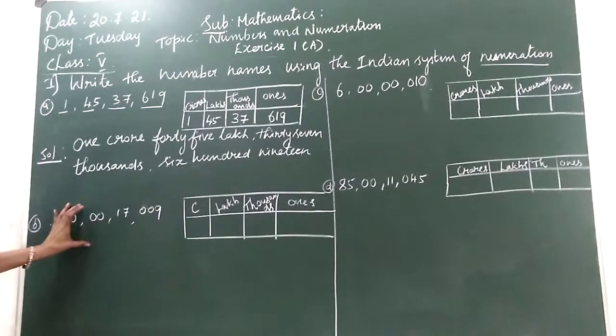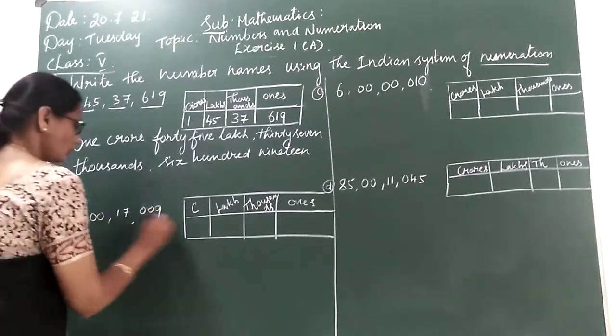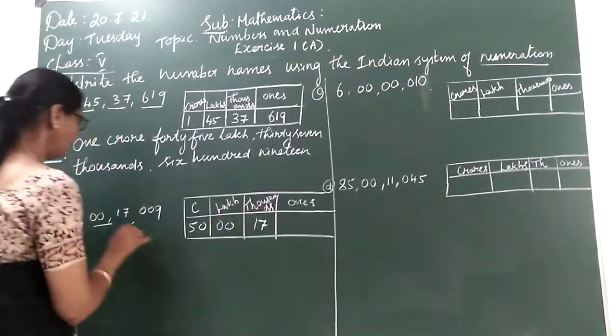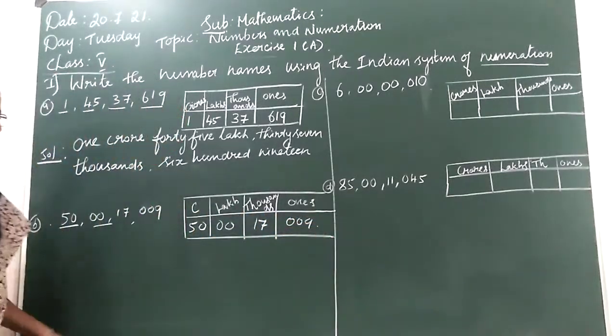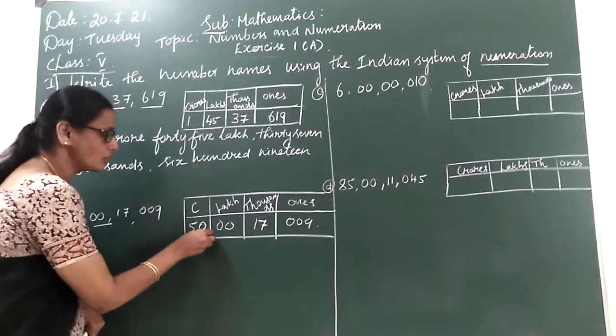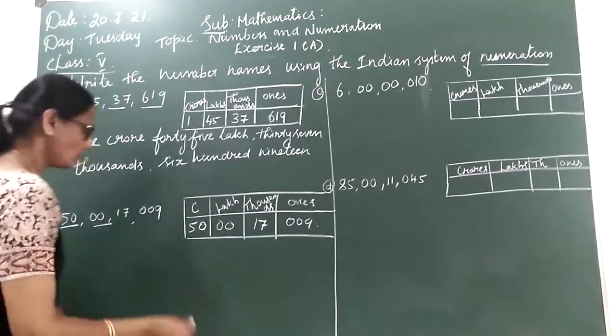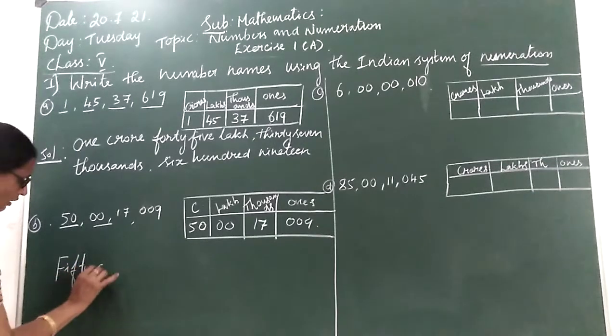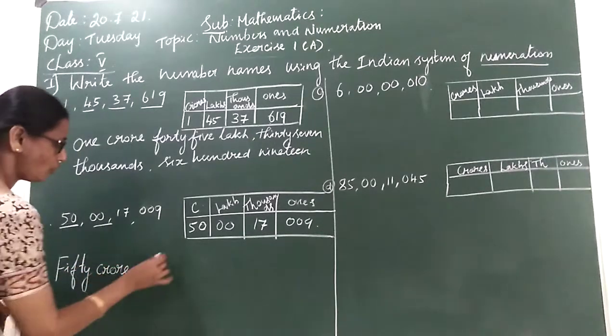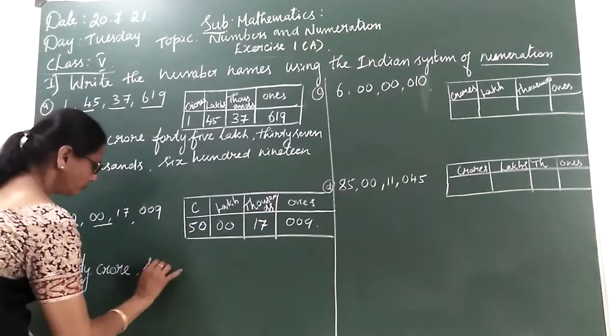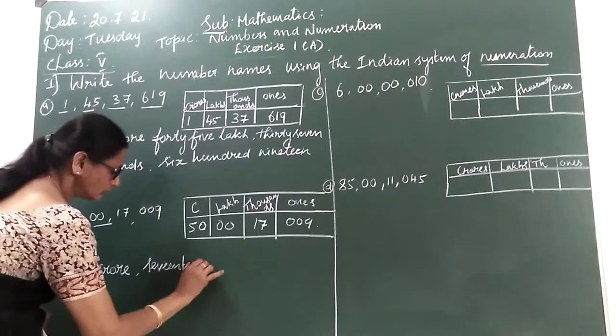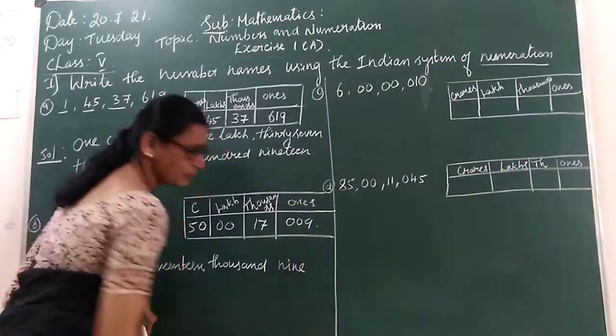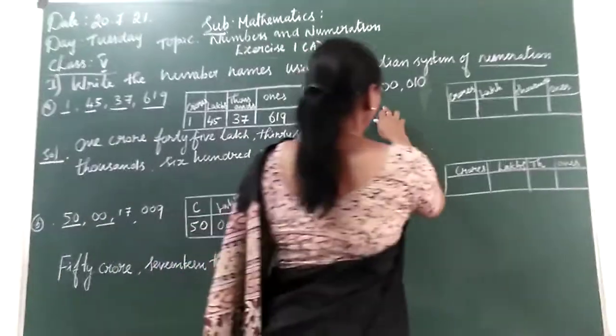After they draw the place value chart, enter the digit according to the period. So 50 in crores period, 0 in lakhs period, 17 in thousands period, 9 in ones period. Writing number names: F-I-F-T-Y, 50 crores, seventeen thousand, nine. That's how they read.